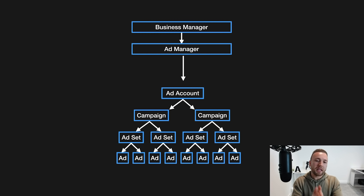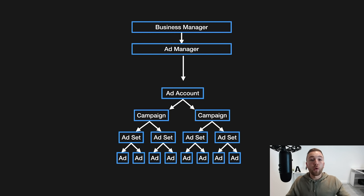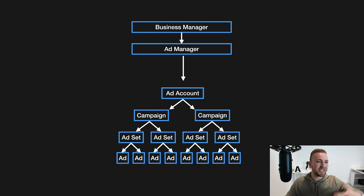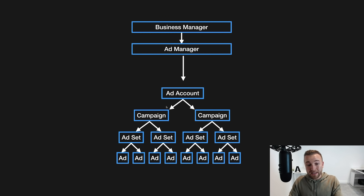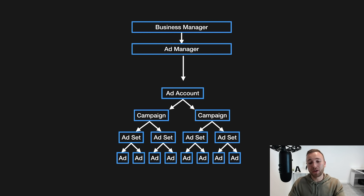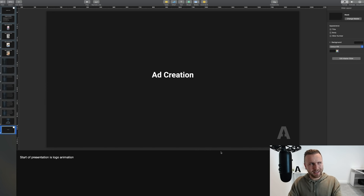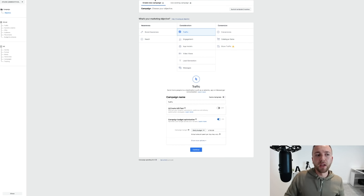I've already covered all the rest of the setup in previous videos, but we are going to go through exactly how you can create creatives for Instagram story ads and normal ads. Here's a top-down view of what your ad account will look like. You'll have Business Manager and Ads Manager, an ad account for every client or business, and then campaigns for different objectives — one for vanity metrics, one for traffic — with different audiences and ads inside each.